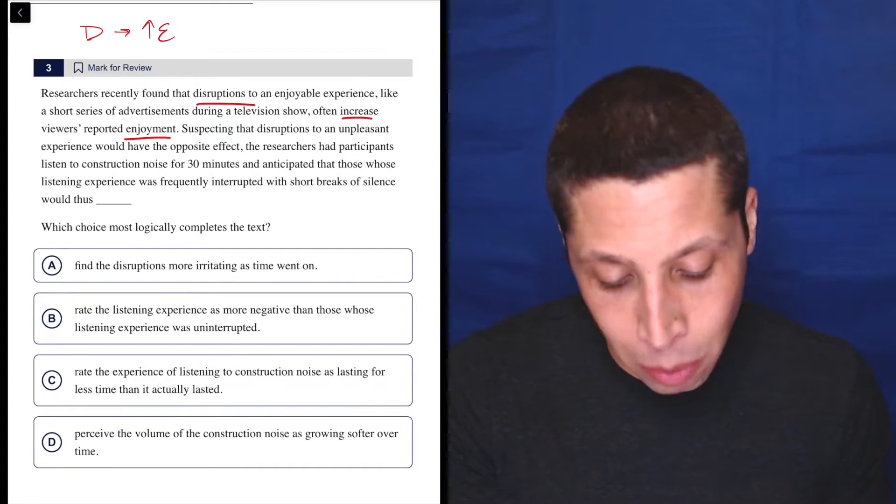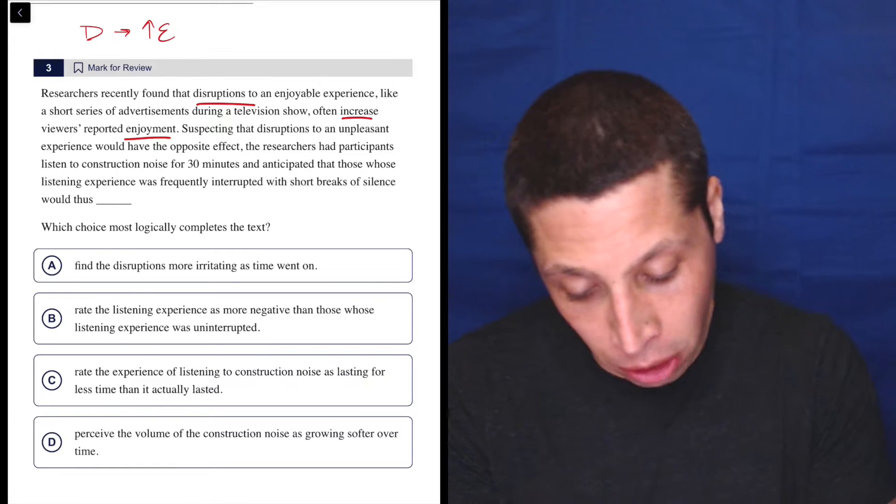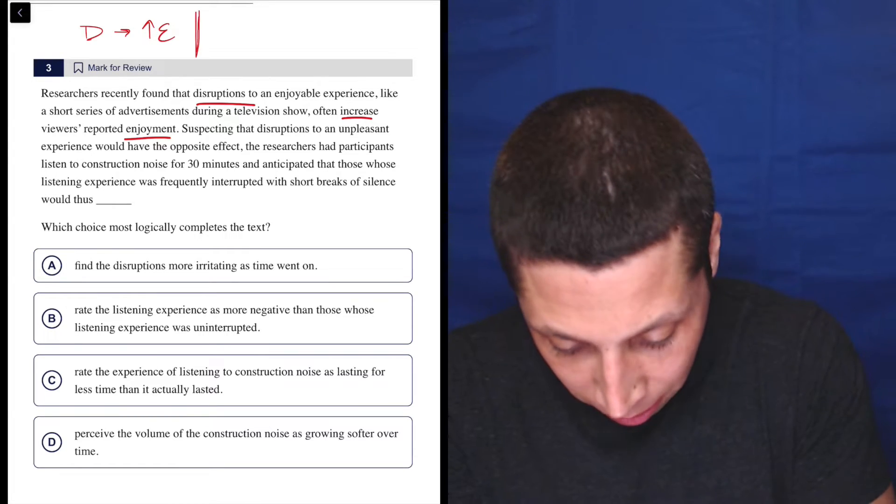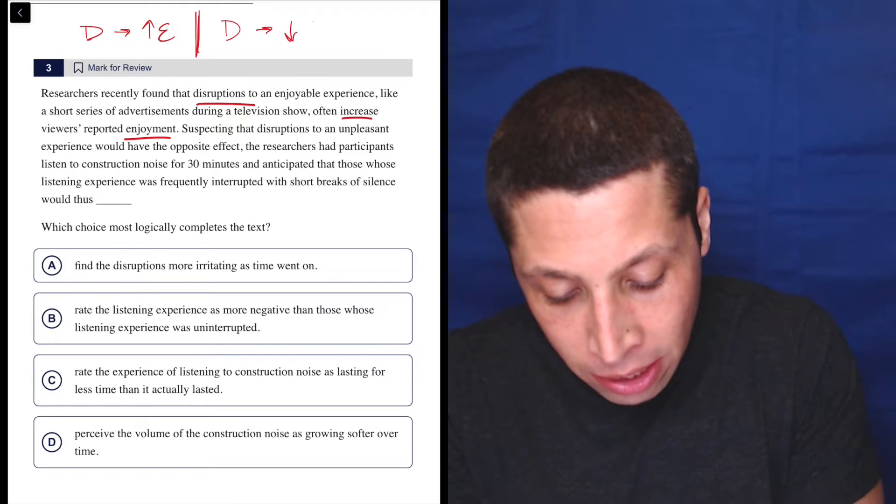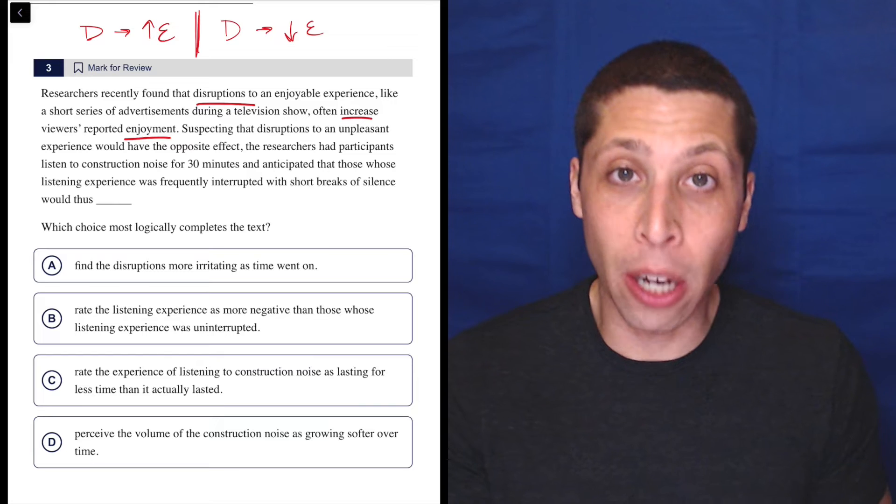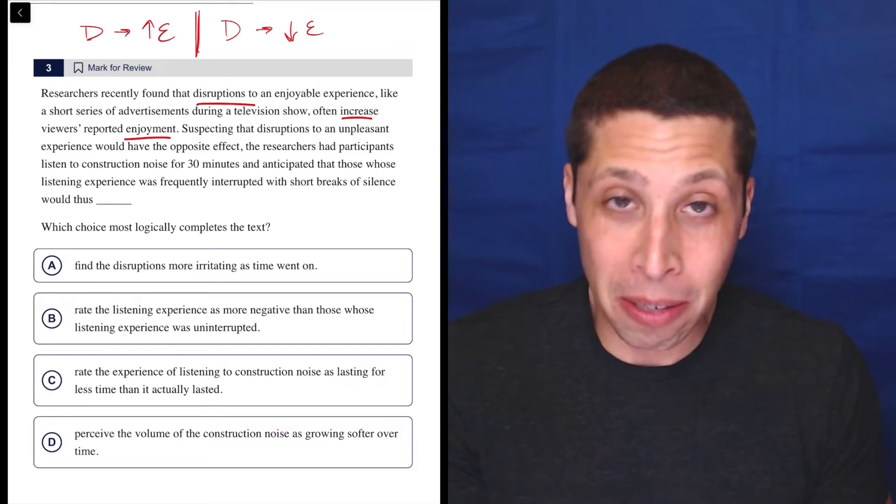Suspecting that disruptions to an unpleasant experience would have the opposite effect. So new effect, right? So there's a different thing here. Here we're saying that disruptions would decrease enjoyment. And we can start to be like, okay, let's add a little bit more.